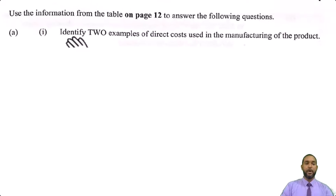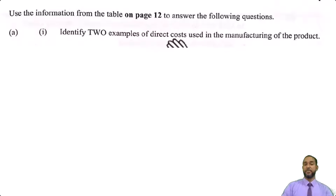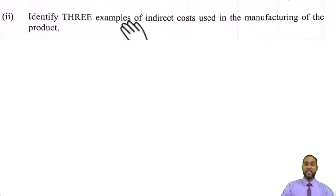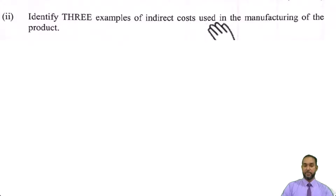In part one, they want to identify two examples of direct costs used in the manufacturing of the product. And in part two, identify three examples of indirect costs used in the manufacturing of the product.